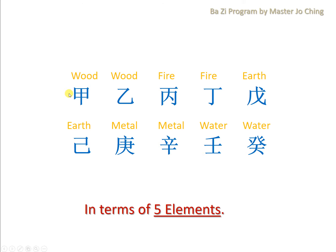In terms of five elements, JIA is Wood, YI is also Wood. In terms of symbols, people see JIA like a tall tree, while YI is like a plant. BING is Yang Fire, like the sun, whereas TING is Yin Fire, which is the candle light. Yang Earth is symbolized like a mountain or a big rock, whereas Yin Earth is actually a paddy field. Yang Metal GENG is like metal ore or a big sword. Yang Water REN is like a big sea, and Yin Water GUI is like a raindrop or dew.